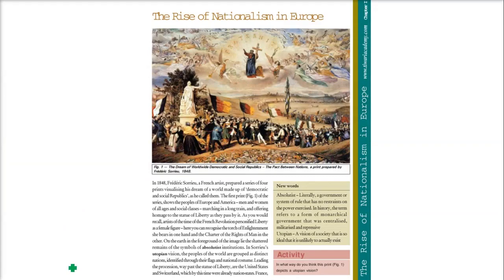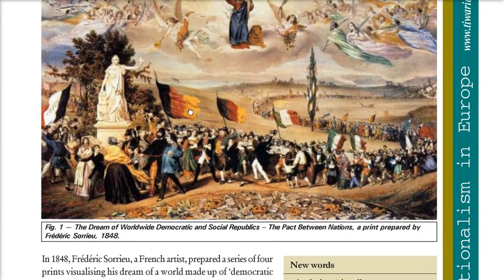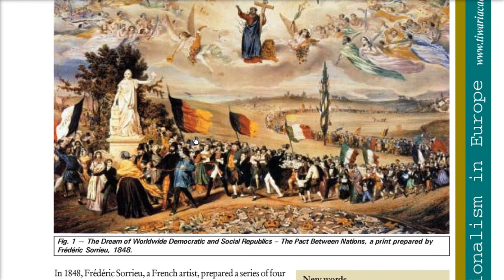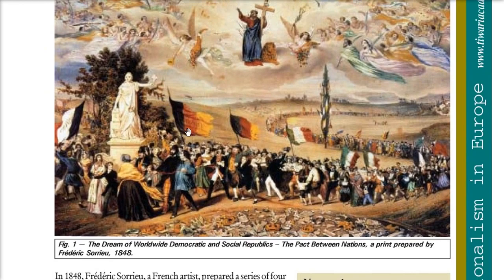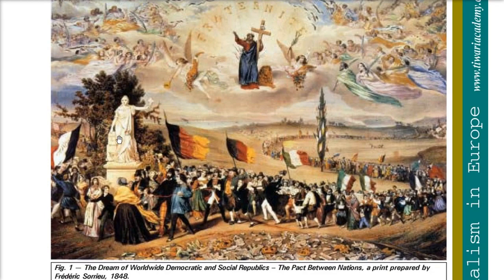Here is a picture we are going to talk about a lot, so we need to understand it. This was prepared by Frederick Saurio in 1848. The picture shows a statue — a women's statue representing freedom or liberty — and there are people in line with different country flags. Jesus Christ and others also appear.